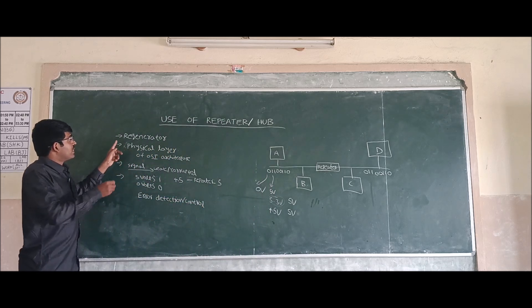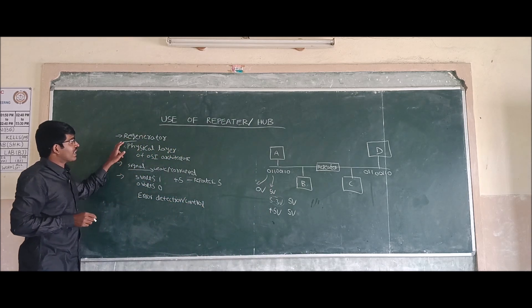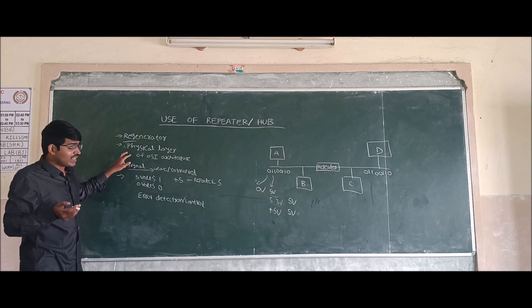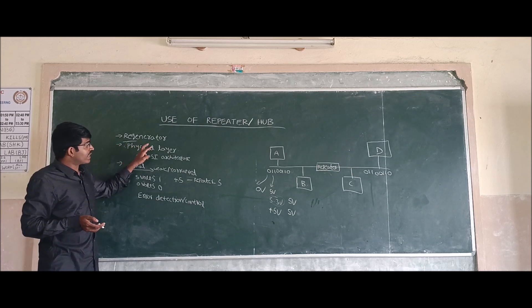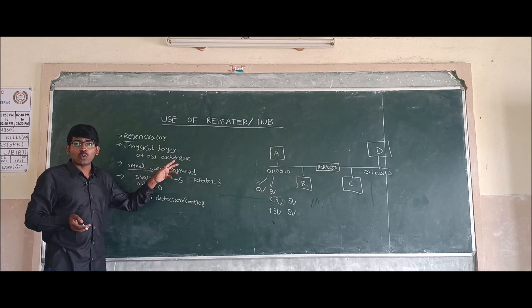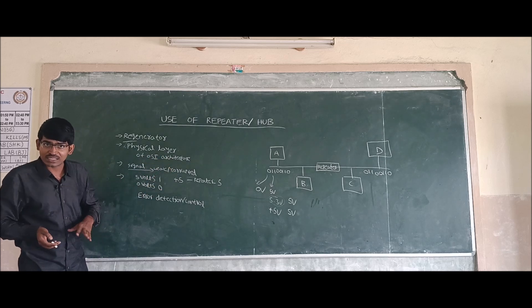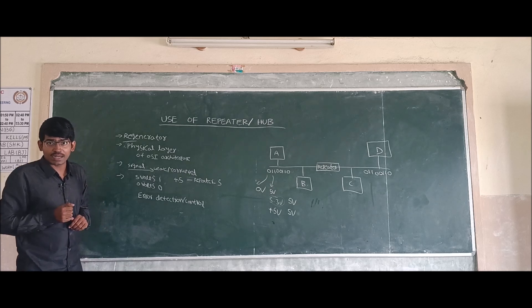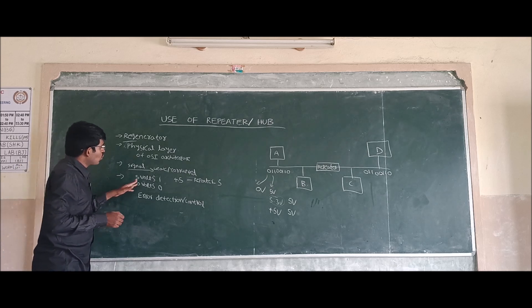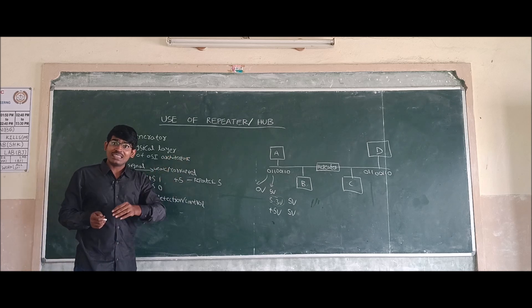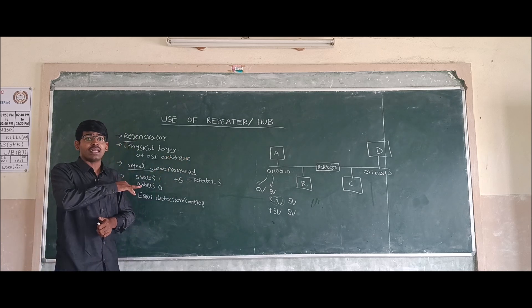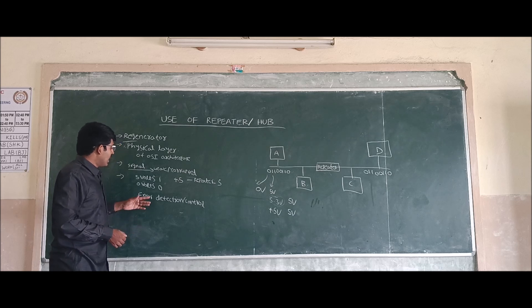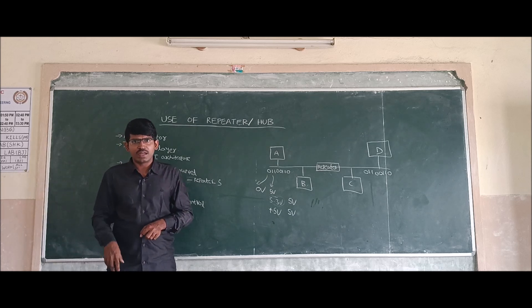The repeater acts as a regenerator connected to the physical layer of the OSI architecture. OSI architecture is the ideal architecture, not practical - TCP/IP is the practical architecture. Weaker corrupted signals can be regenerated by using the repeater. This is the function of the repeater.